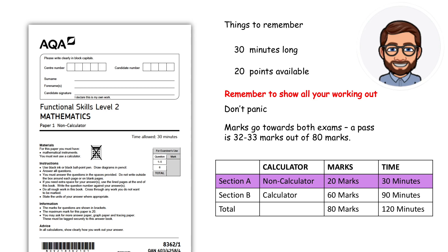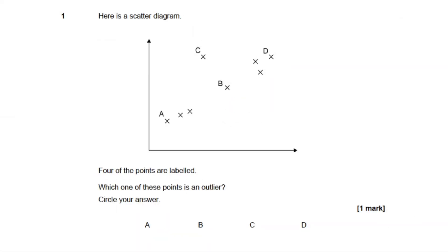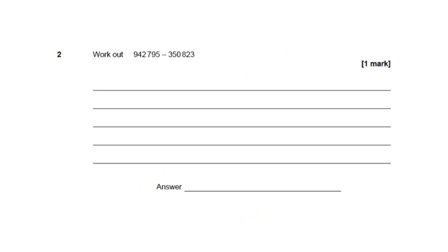Question one: here is a scatter diagram. Four of the points are labeled — which one of these points is an outlier? Circle your answer. When you see a scatter graph like this, you need to perceive a trend. All these points of data are heading in a certain direction. An outlier would be a point of data that is bucking the trend and not within it. So our outlier would be this one here — the answer is C.